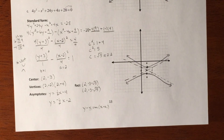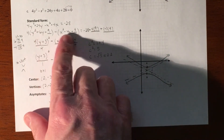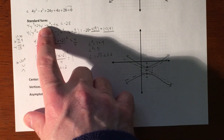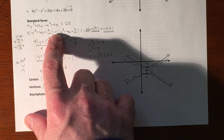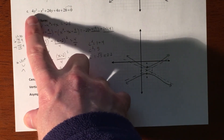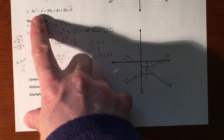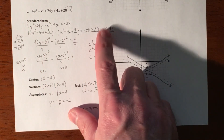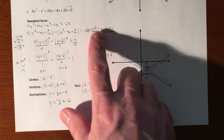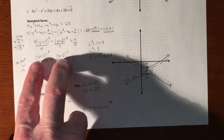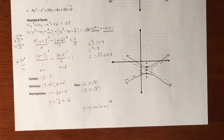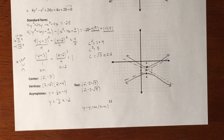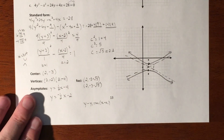That covers everything for this hyperbola. It's the longest conic to work with because you have to complete the square. It's tricky because you may need to factor out a coefficient and you'll always need to factor out a sign, since one of the two variables is negative — and you have to account for that factored negative on the right side. Complete the square, find your center, and you have everything you need to graph the hyperbola.